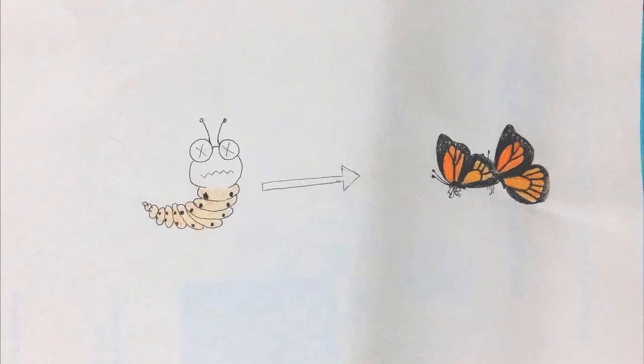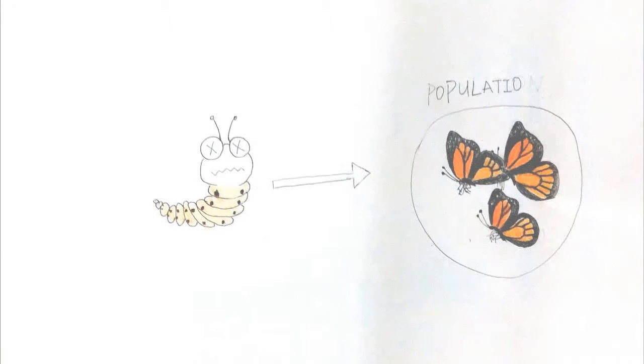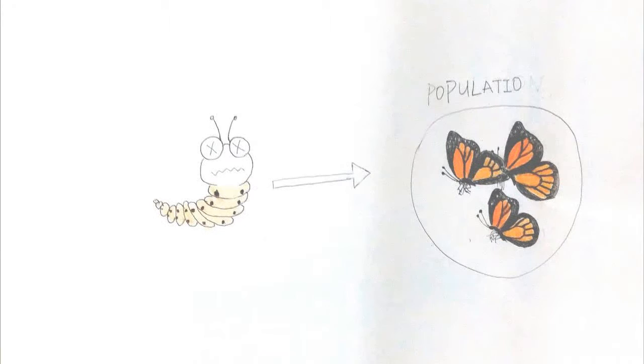Butterfly larvae die because of lack of food. Therefore, the population of Monarch butterflies declines. Government should pay attention to the impacts of GMOs to help Monarch butterflies survive.